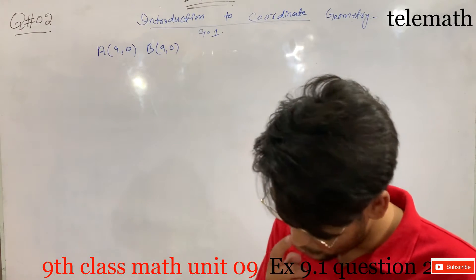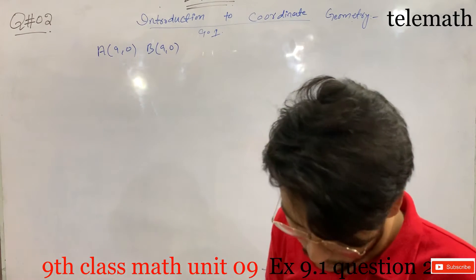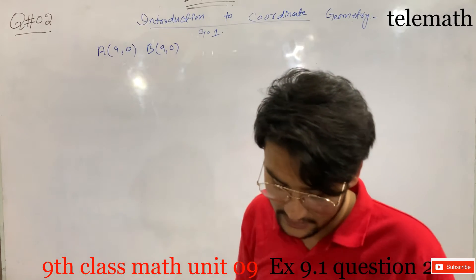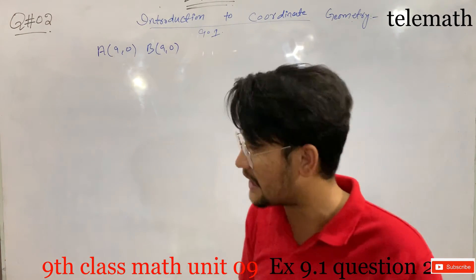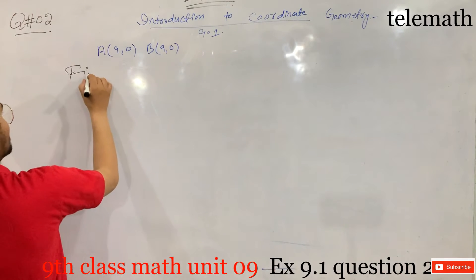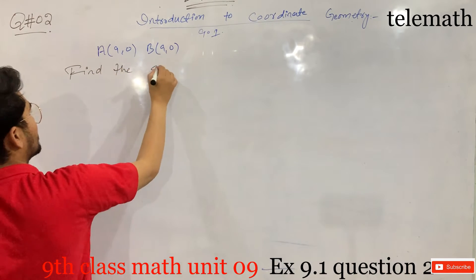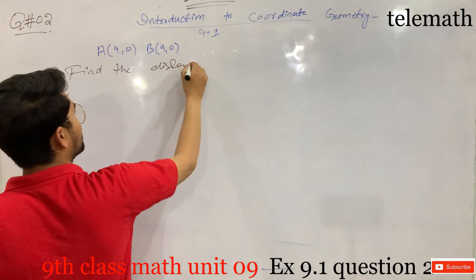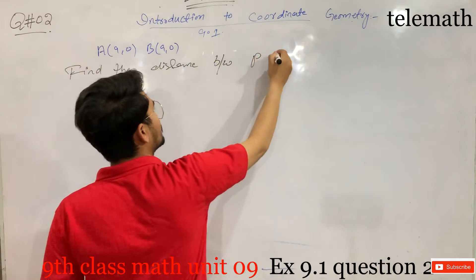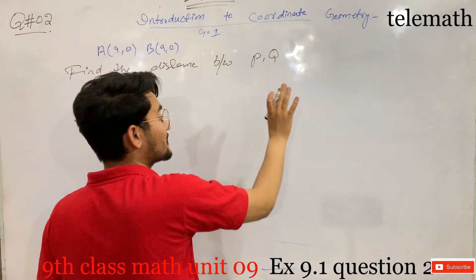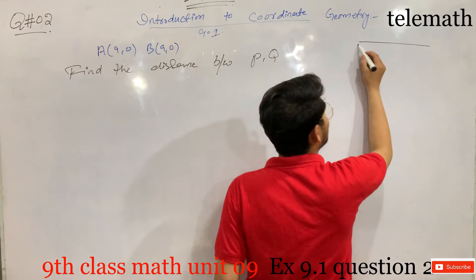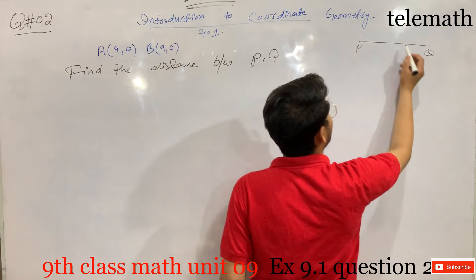Let P be the point on the x-axis with x-coordinate a, and Q be the point on the y-axis with y-coordinate b, as given below. We have to find the distance between P and Q.